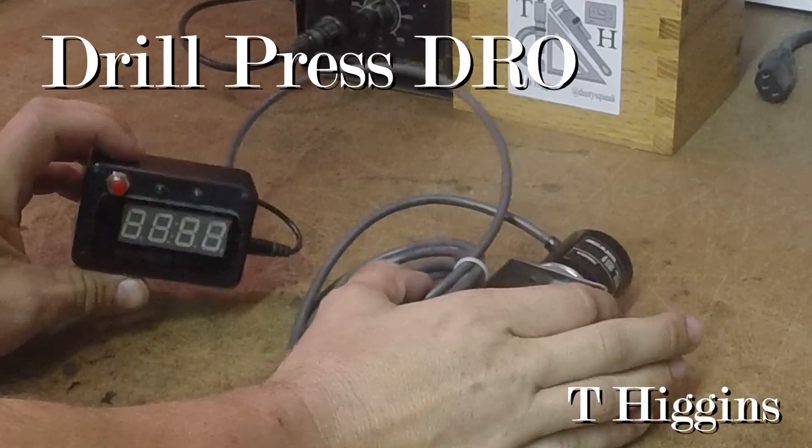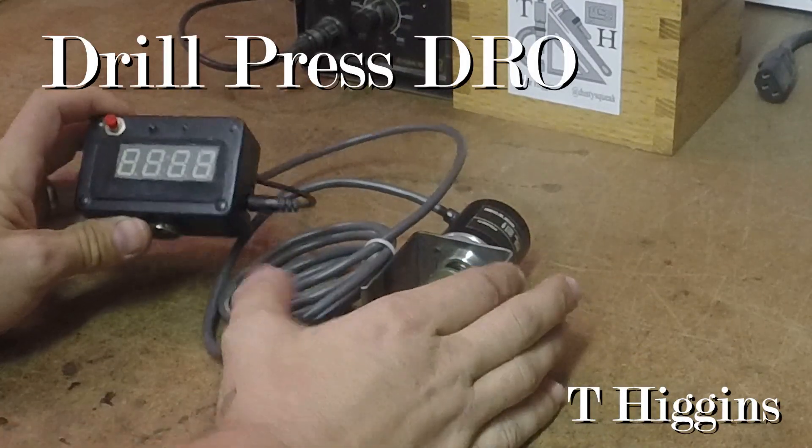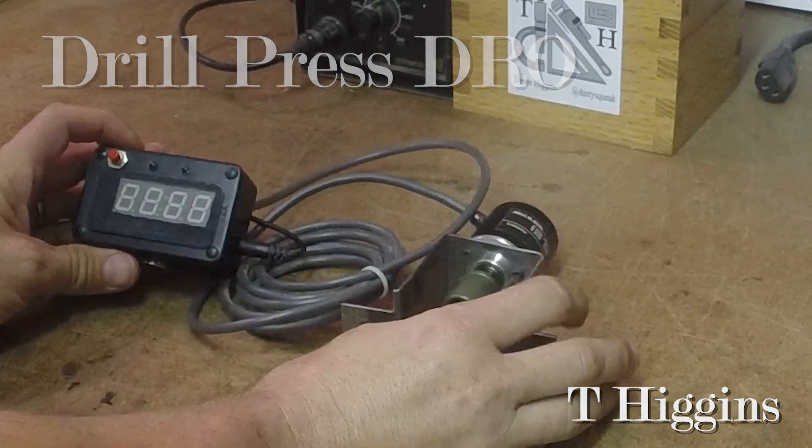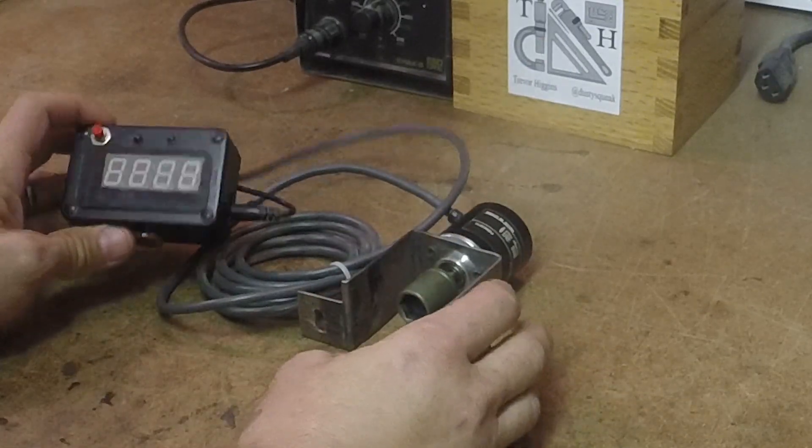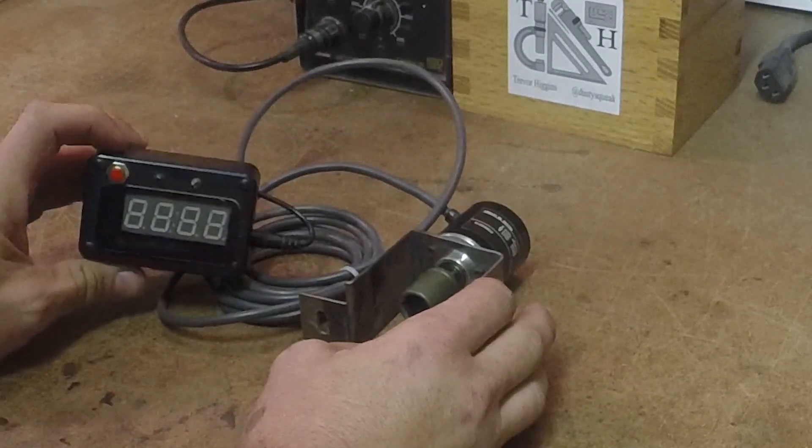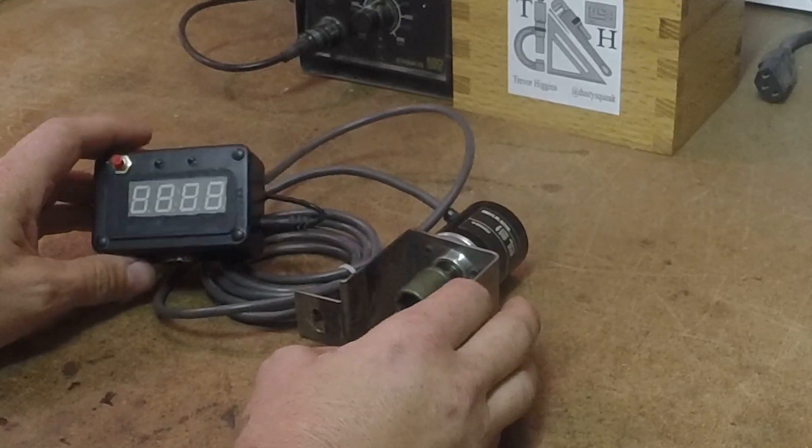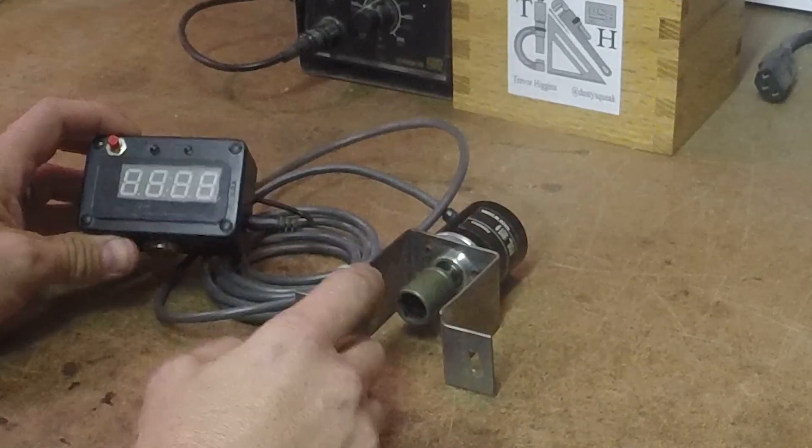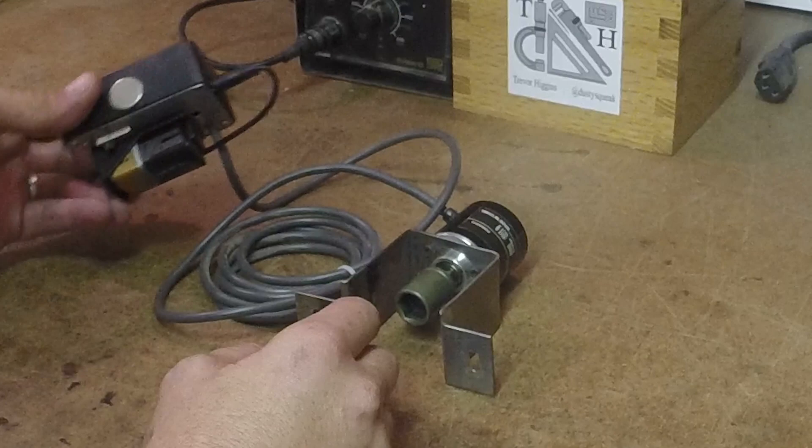This is a digital readout for my small drill press which I built a little while ago. I didn't do a build video on it because it was a lot of soldering and coding and programming. Doesn't make for good videos. But I wanted to do a rundown on how it goes together.